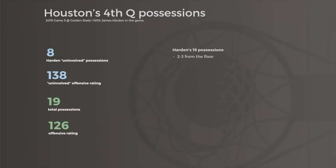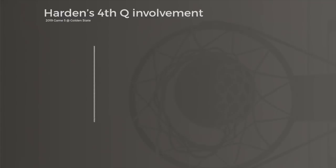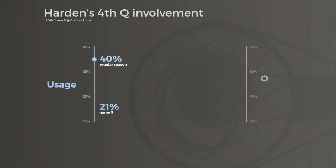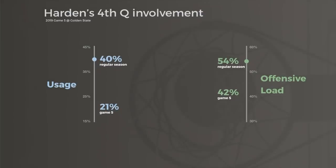Harden himself went two for three from the field, drew a foul, created two shots for teammates, and would have had a third shot created if not for Tucker stepping out of bounds. He also set up a potential layup assist but Tucker couldn't finish. This is exactly why I prefer metrics like offensive load when estimating offensive involvement instead of usage rate. According to traditional usage, Harden's fourth quarter involved three shots and a turnover in 19 possessions for a 21% usage rate — about half his regular season number with CP3 on the court. But his offensive load, which includes creation and passing, would have been 42%, only slightly down from his regular season rate — which makes it a completely normal 19-play stretch for the Houston Rockets.